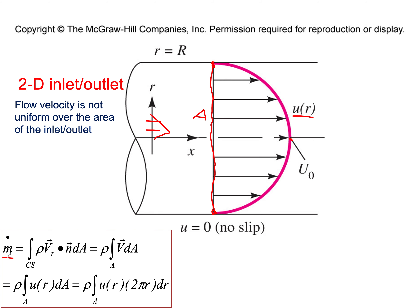The answer is yes. m_dot will be the integral of ρ·v_relative·n dA over this region of the control surface. We need a relationship between velocity v and area A. In this example, all velocities are perpendicular to the area, so the dot product gives cosine θ = 1, and we drop it. We end up with the integral of V dA, and then we need the velocity distribution as a function of radial distance r.